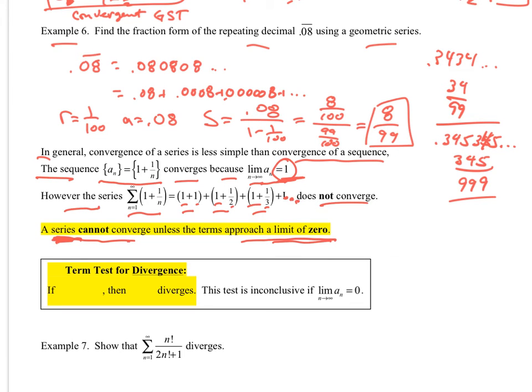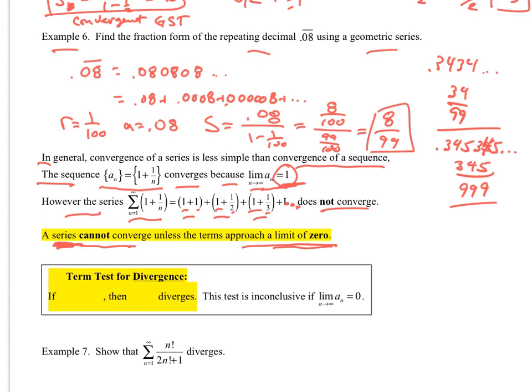So this is what we call the nth term test for divergence. And this tells us that if the limit as n goes to infinity of a sub n does not equal 0, then the overall sum does diverge. OK? This test is inconclusive if the limit is equal to 0.